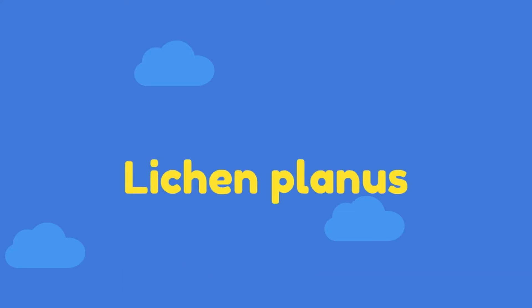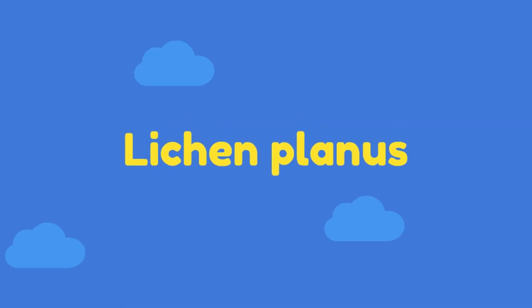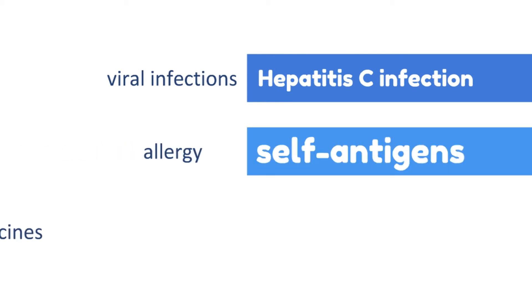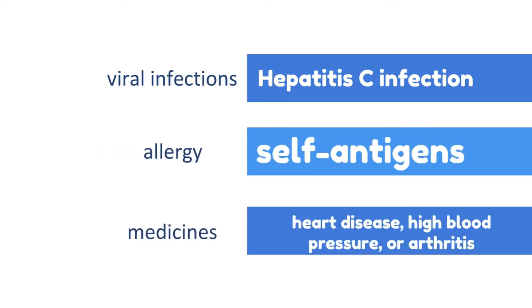Lichen planus is a disease of the skin caused by our immune system. The cause of lichen planus is still unknown, but an allergy or hepatitis C infection can trigger it. Some medicines for heart disease, high blood pressure, or arthritis are also contributing factors.